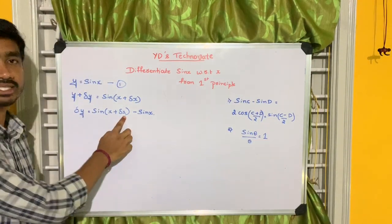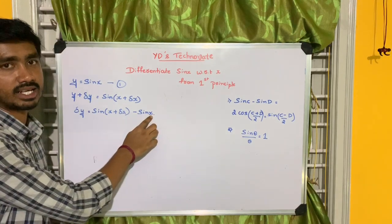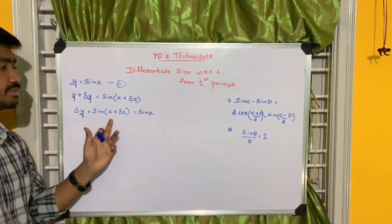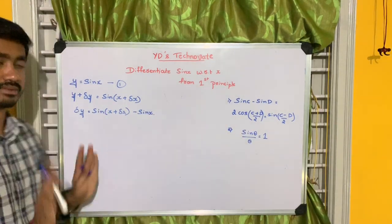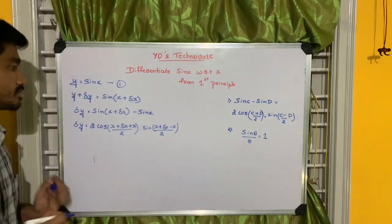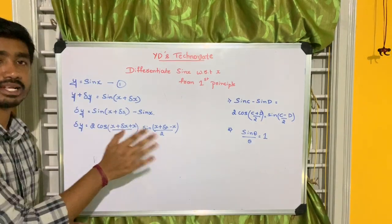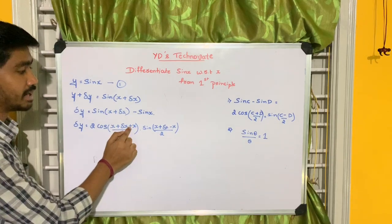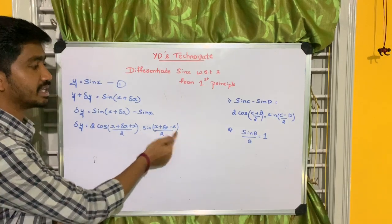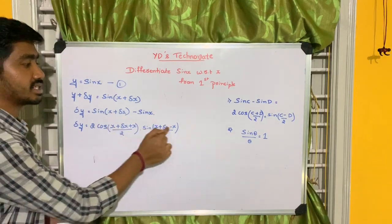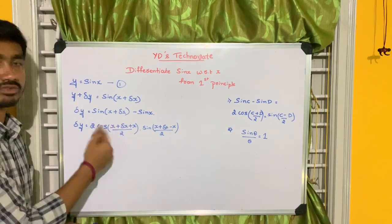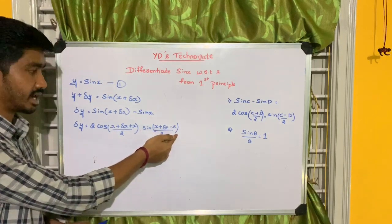So the value of x plus delta x can be considered as c and x can be considered as d. Use this formula: replace c by x plus delta x and replace d by x. So we get 2 cos of (x plus delta x plus x) by 2, which simplifies to 2x, into sine of (x plus delta x minus x) by 2, where the x and minus x cancel.